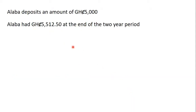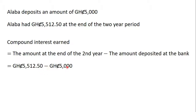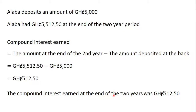At the end of the two-year period, Alabad had five thousand five hundred and twelve Ghana cedis fifty pesewas in her account. The amount she deposited was five thousand Ghana cedis. The compound interest is equal to the amount at the end of the second year minus the amount she deposited: five thousand five hundred and twelve cedis fifty pesewas minus five thousand cedis equals five hundred and twelve Ghana cedis fifty pesewas.